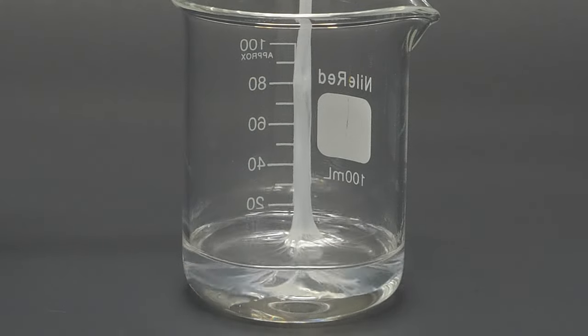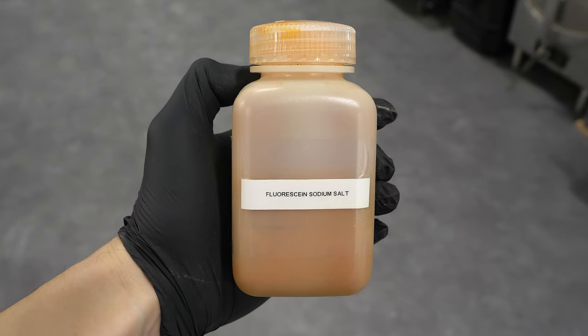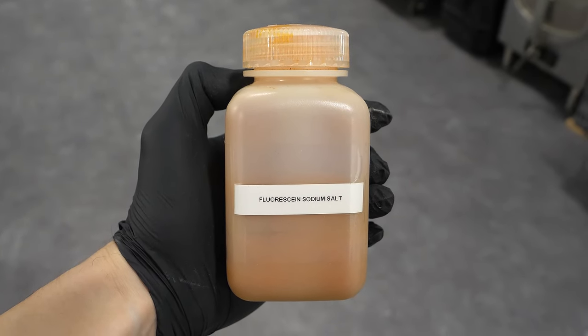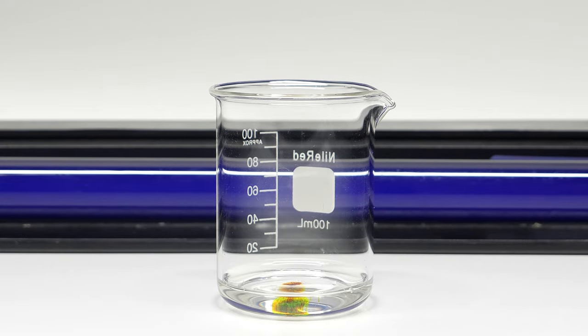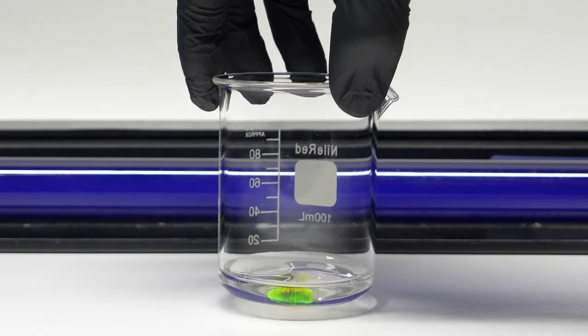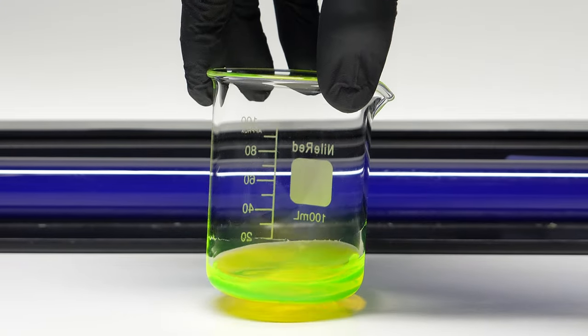What I didn't try in that video, though, and what I think could be cool, is to add something called fluorescein. This is a dye, and as a solid it's red, but when a small amount of it's dissolved, it fluoresces green, especially under a blacklight.